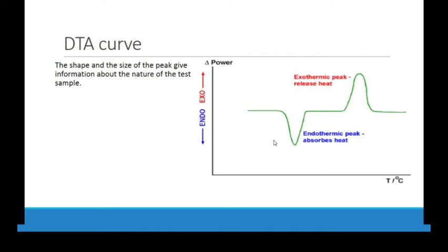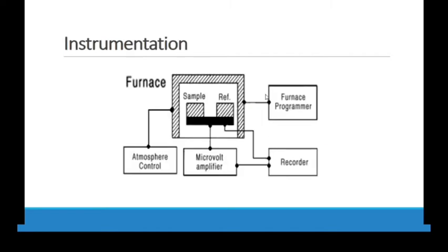If we talk about the instrument, it looks similar to your DSC setup. You have one sample pan, one reference pan, and a furnace which controls the temperature. There is also an atmosphere control used for gases — you must introduce or purge nitrogen, which is an inert gas, to remove oxygen or any other gas that can react or alter the temperature of the furnace. The output is then recorded through a micro recorder.